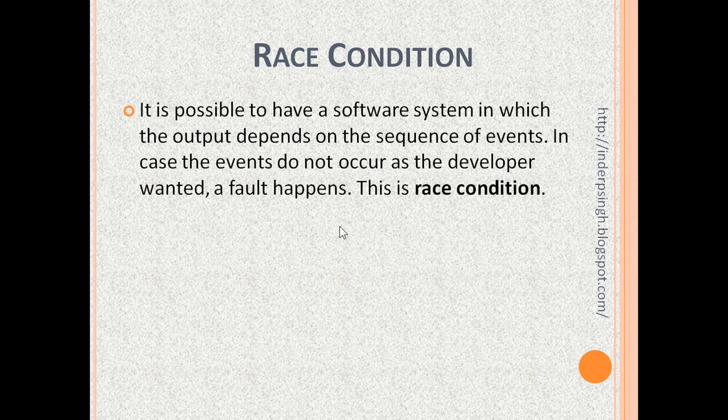It is possible to have a software system in which the output depends on the sequence of events. If the events do not occur as the developer wanted, a fault happens. This is the race condition.